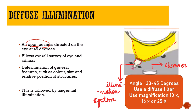Here the beam and the observer system are at a 45-degree angle. The filter used is a diffuse filter, and the magnification can be 10x, 16x, or 25x. The purpose of diffuse illumination is to allow an overall survey of the eye and the ocular adnexa. It helps determine general features such as the color of the eye, size, and relative position of structures. Diffuse illumination is usually followed by tangential illumination.